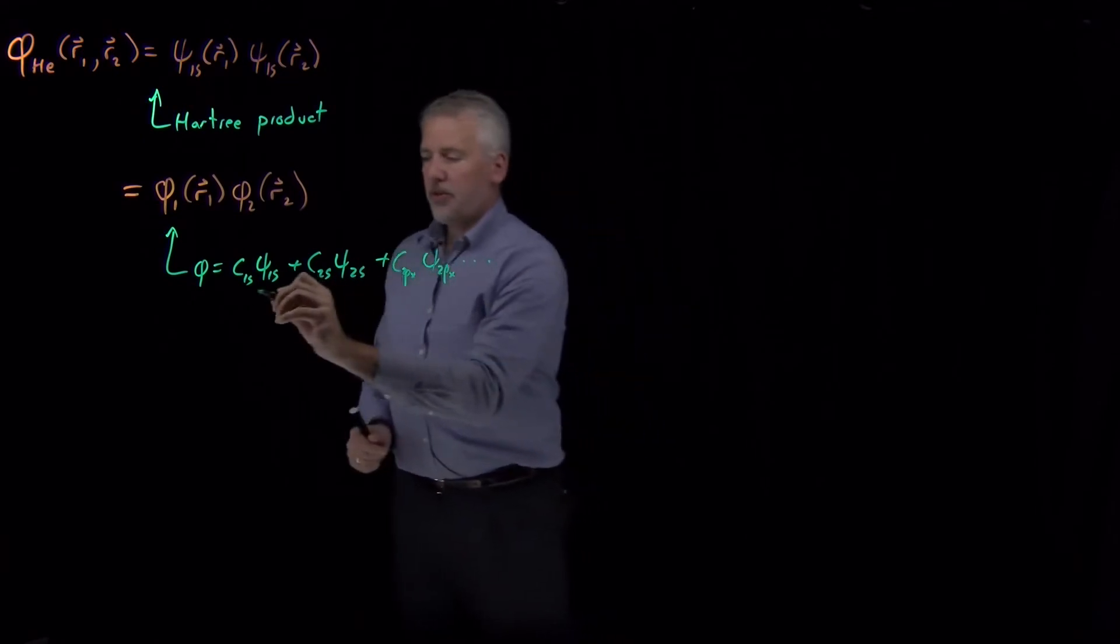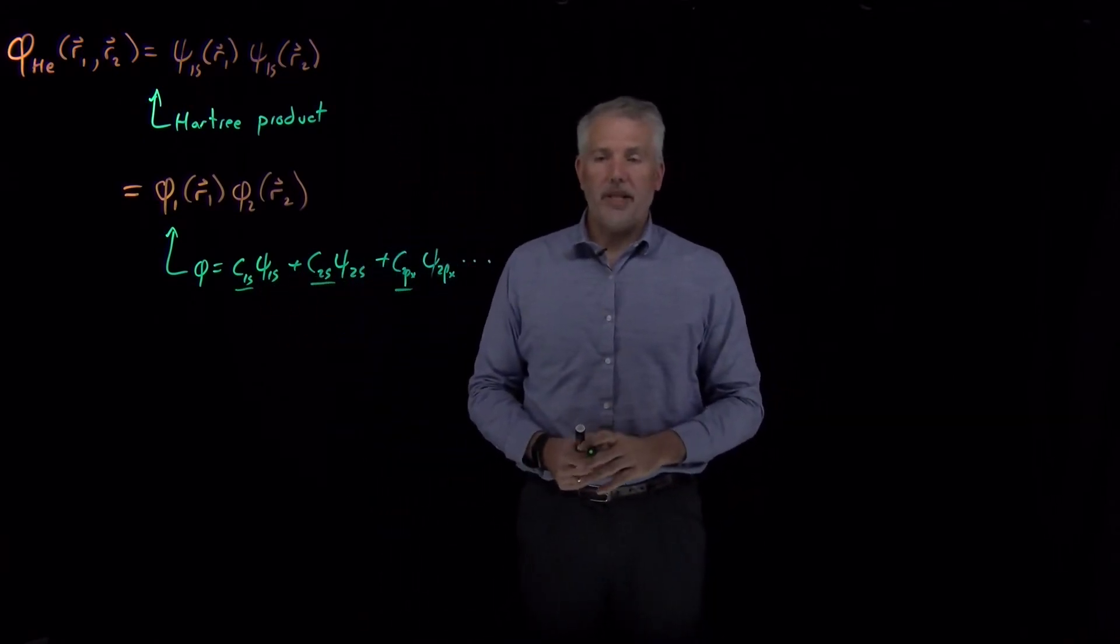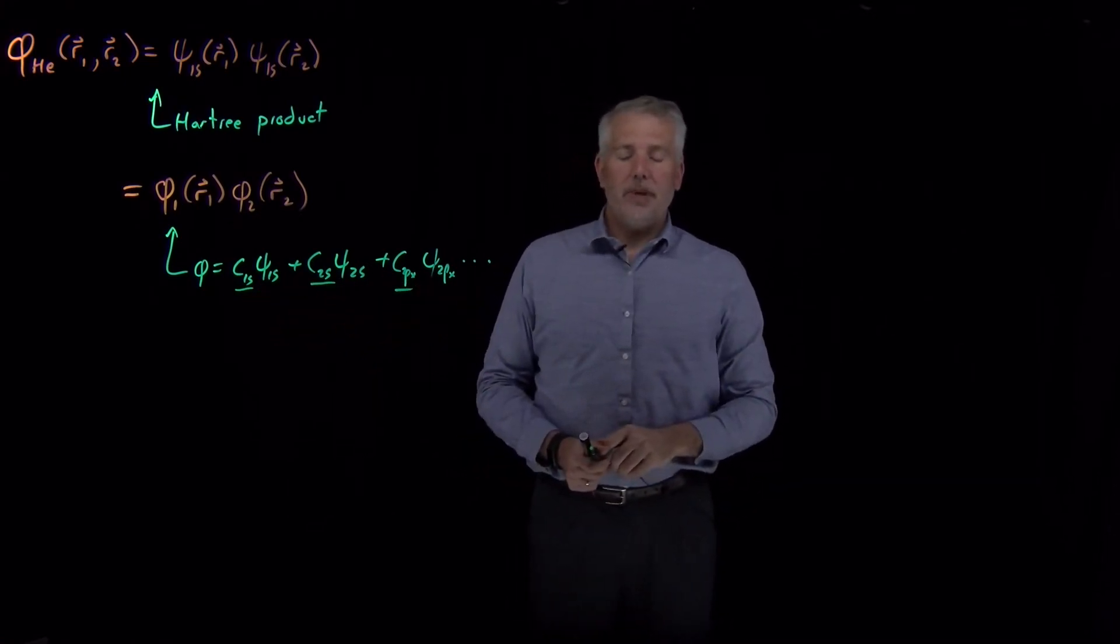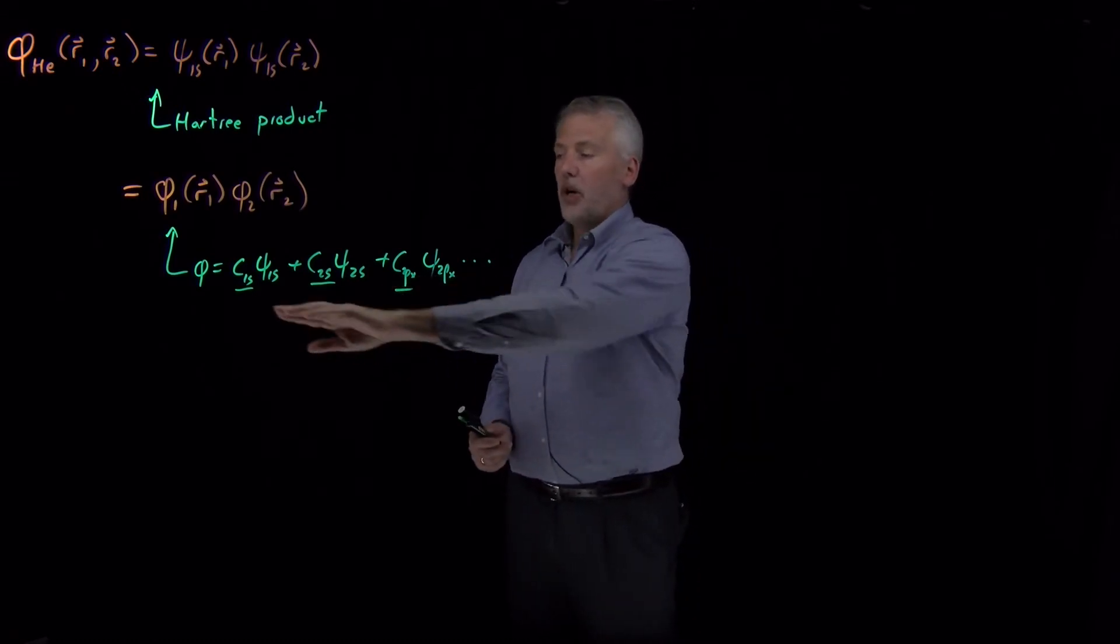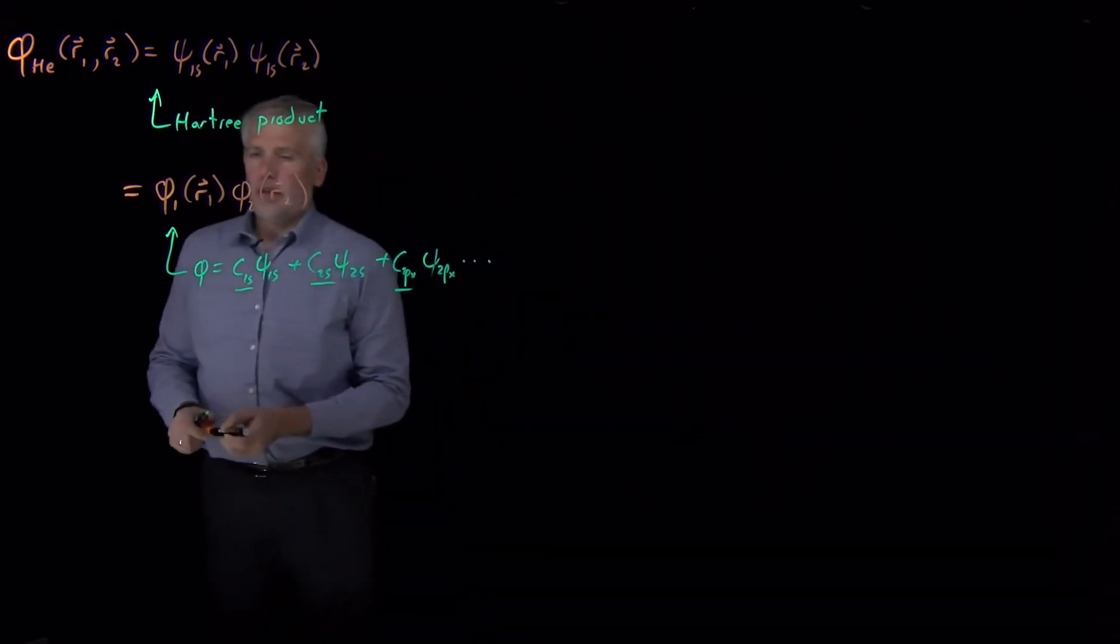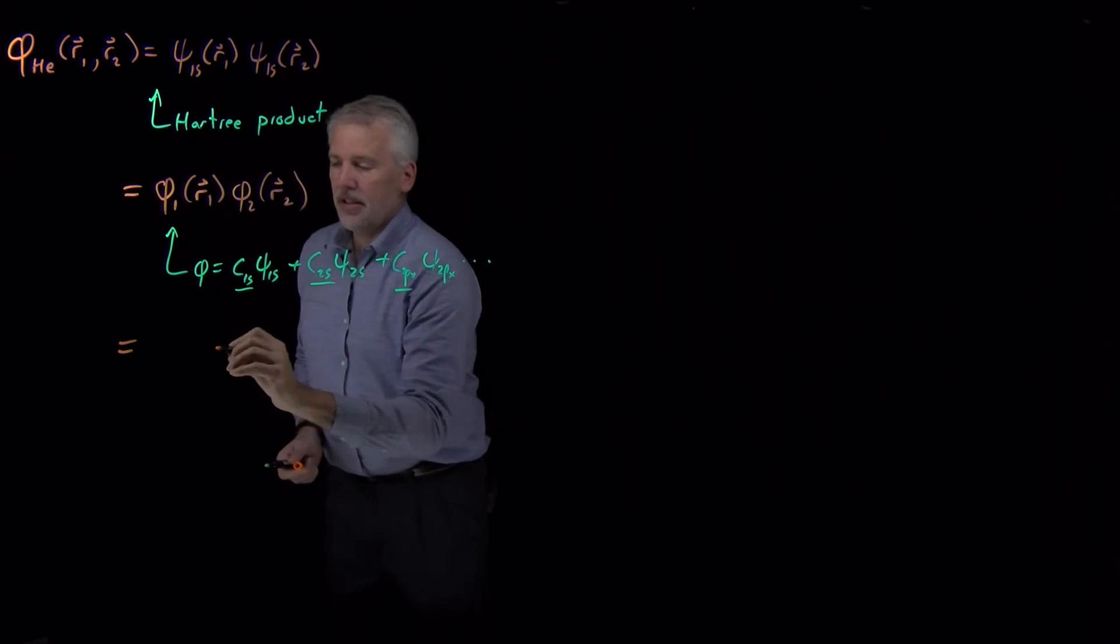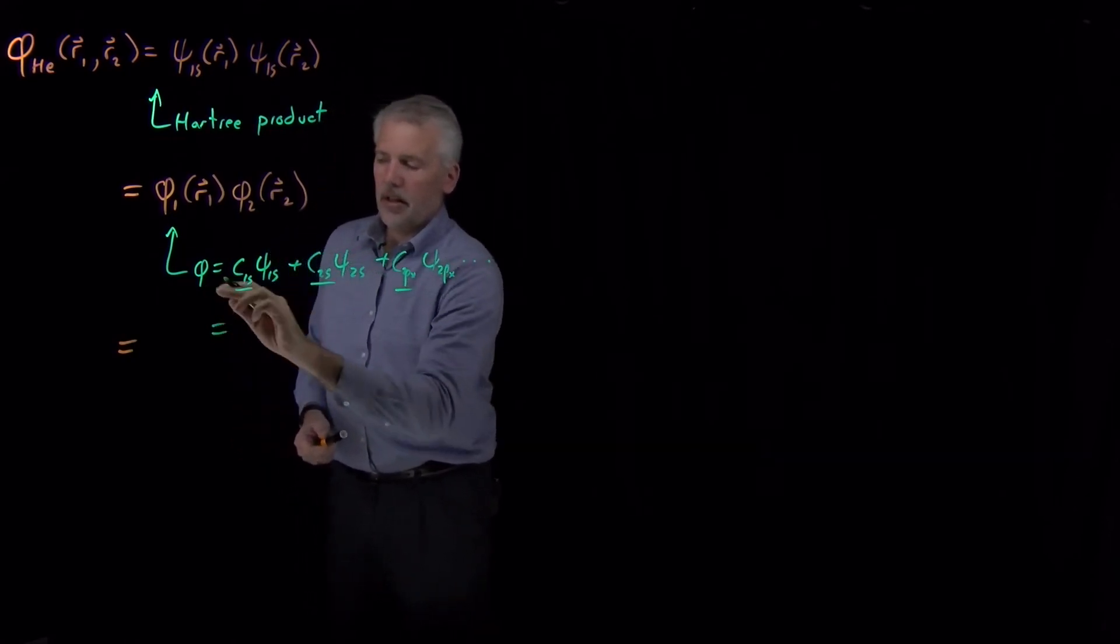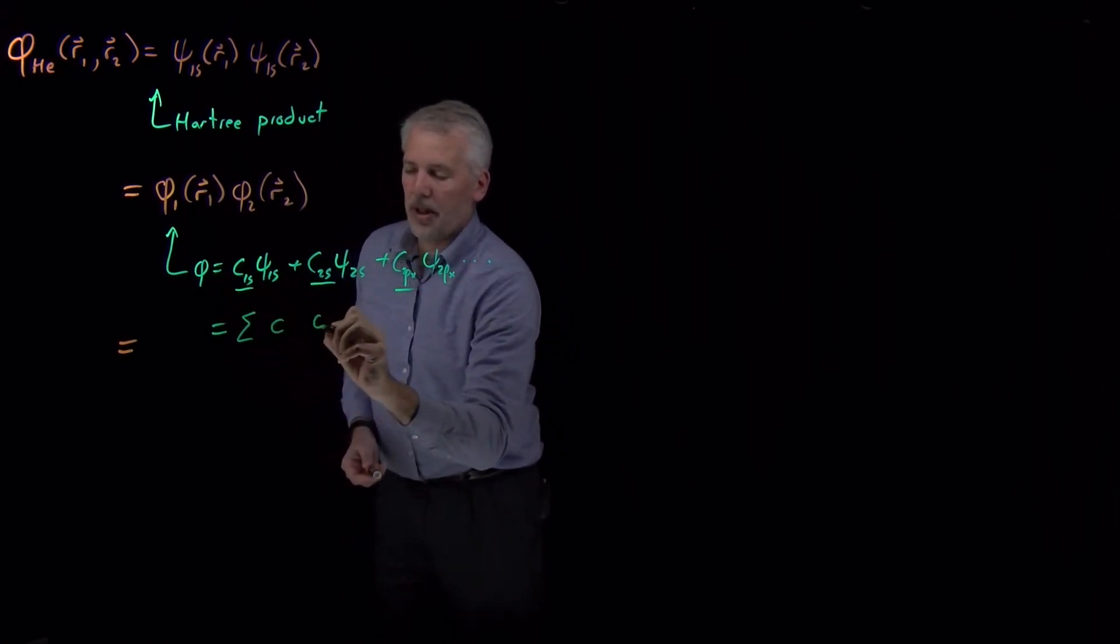And then, if I use these coefficients as my variational parameters, if I take derivatives and say, what value of C1s and C2s and C2px give me the lowest possible variational energy, then I'll do better than if I only include the first term. So to write that out a little more fully, my helium wave function I could write as - actually first let me say that this - I can write the one electron function as a sum of coefficients times wave functions.